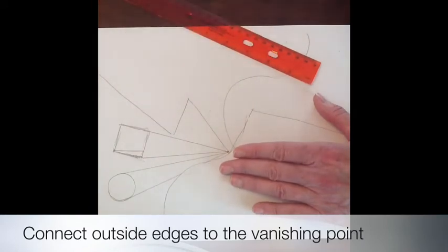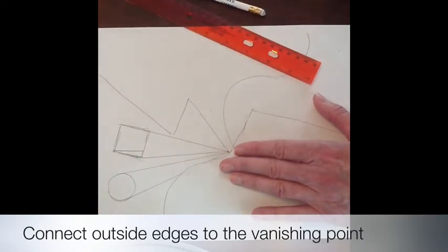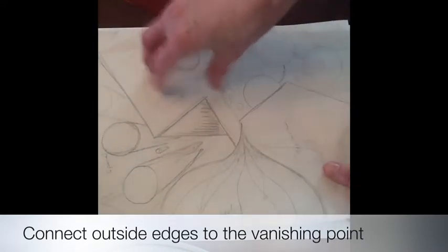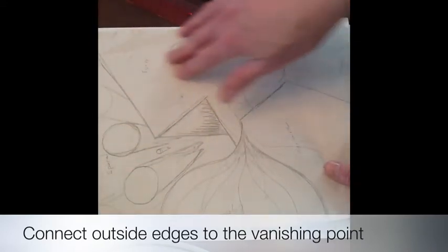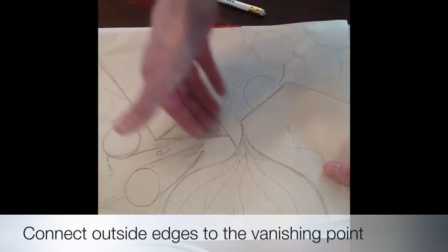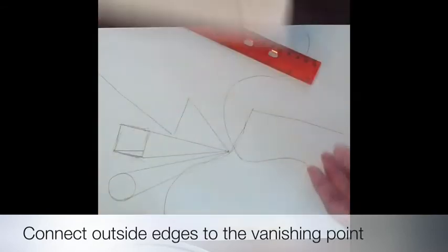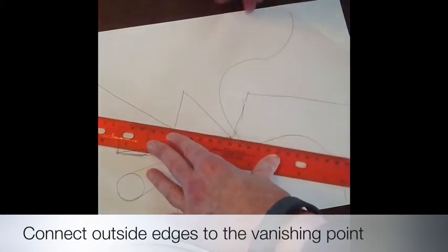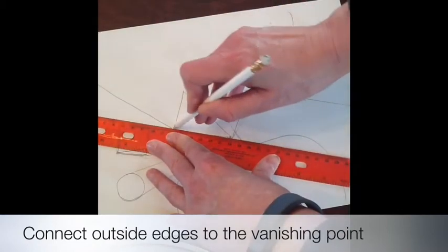I also, if you notice on my first design, I made it look like even the shape of the large section here was also receding into space. And that was really easy to do as well. I just took that corner and connected it to the vanishing point.